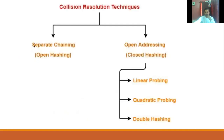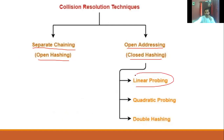There are different techniques to avoid collision. They are broadly categorized as: separate chaining (also called open hashing), and open addressing (also called closed hashing). Under closed hashing, we will discuss linear probing and double hashing. Let us discuss each of these one by one.